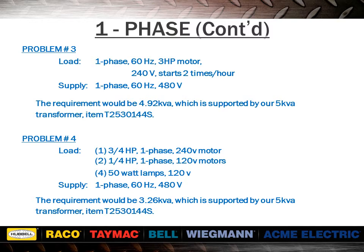For problem four, reviewing table two in section one, a 3/4 horsepower motor requires 1.66 kVA and a 1/4 horsepower motor requires 0.7 kVA. When dealing with incandescent lighting and resistive heating, wattage equals VA — the lamp requires 200 watts or 0.2 kVA. The sum of all different loads is 3.26 kVA, supported by our standard 5 kVA transformer, item number T2530144S.